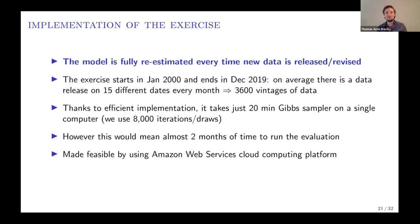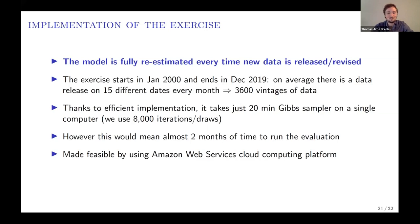Our out-of-sample period starts in 2000—the earliest time series go back to the 1960s. Every time new information comes in, we re-estimate the model, yielding thousands of vintages. Running this on a standard computer would take months. We have parallelized the algorithm and run it in the cloud, which greatly improves speed and makes this feasible.